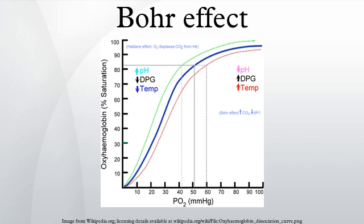Not to be confused with the Bohr equation. The Bohr effect is a physiological phenomenon first described in 1904 by the Danish physiologist Christian Bohr, stating that hemoglobin's oxygen binding affinity is inversely related both to acidity and to the concentration of carbon dioxide. An increase in blood CO2 concentration which leads to a decrease in blood pH will result in hemoglobin proteins releasing their load of oxygen. Conversely, a decrease in carbon dioxide provokes an increase in pH, which results in hemoglobin picking up more oxygen.